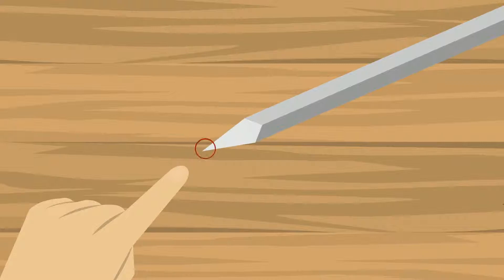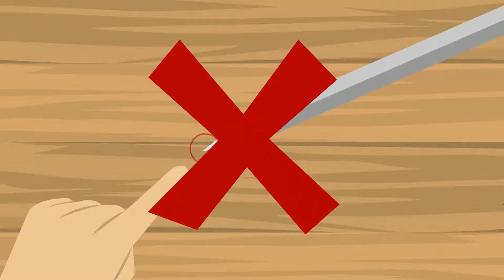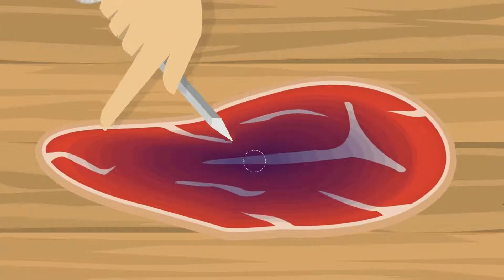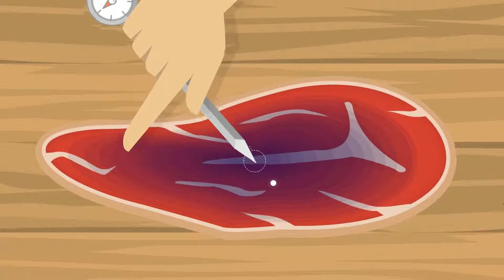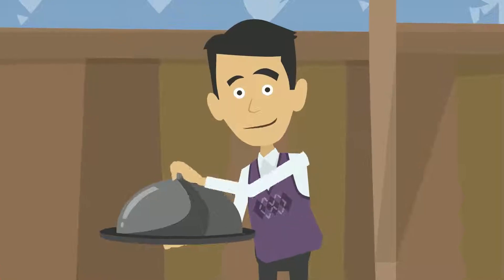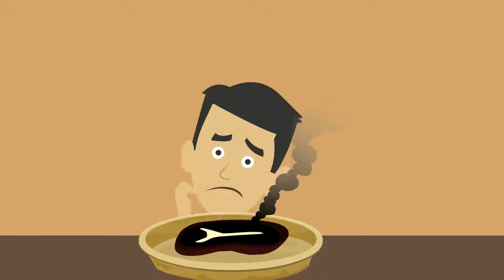The current meat thermometers on the market only have one point of measurement, which is usually located in the tip of the thermometer's needle, a solution that makes it impossible to guarantee correct measurement of the core temperature. If the needle passes just one centimeter past the core, you might see an inaccurate measurement of up to 10 degrees, and that can make the difference between a perfect meal and a ruined one.